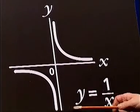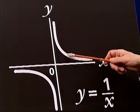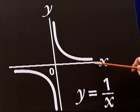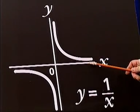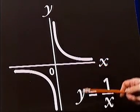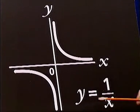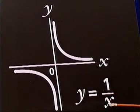Finally, a reciprocal graph has a standard shape which slopes downward from left to right but never touches the x or y axis. You can recognise it from its equation because y is always equal to 1 over x.